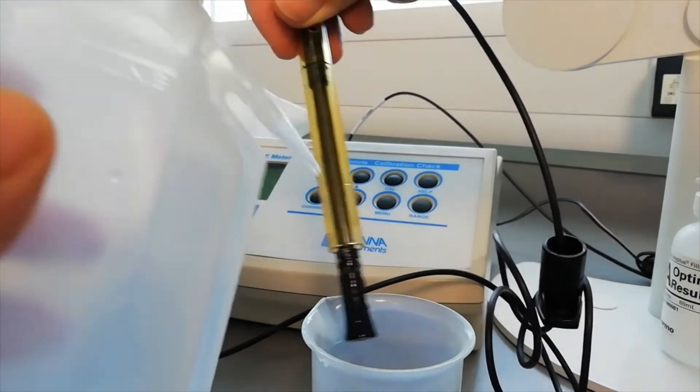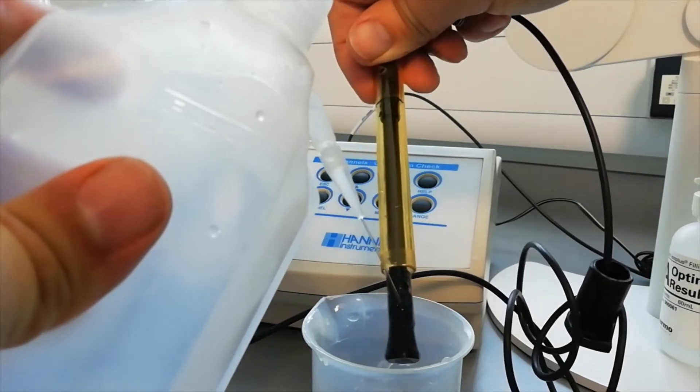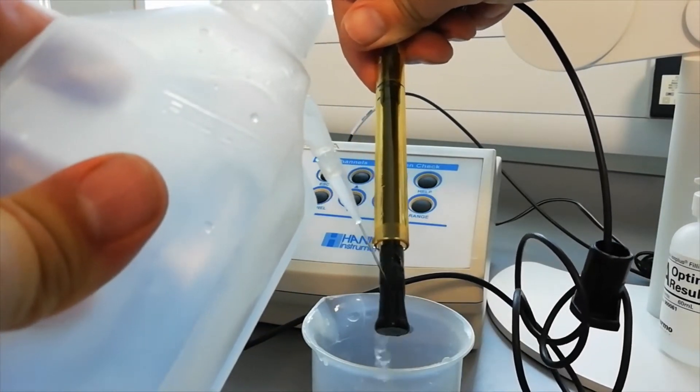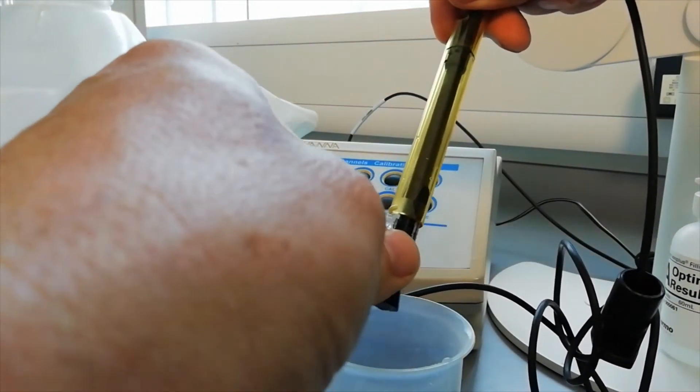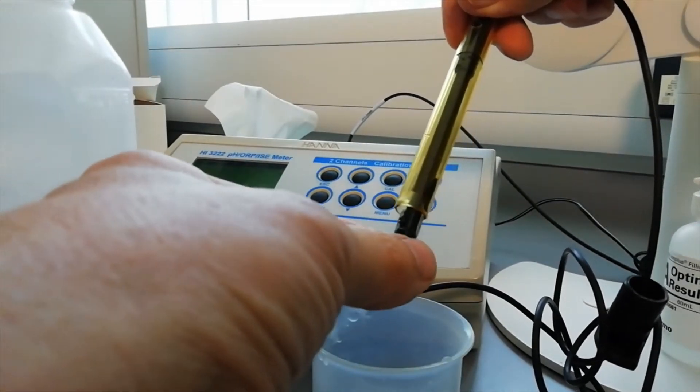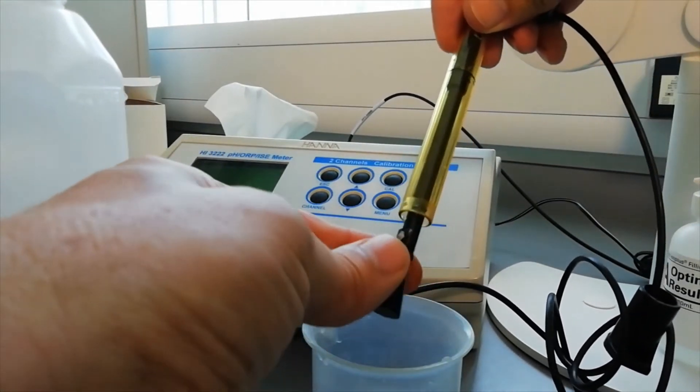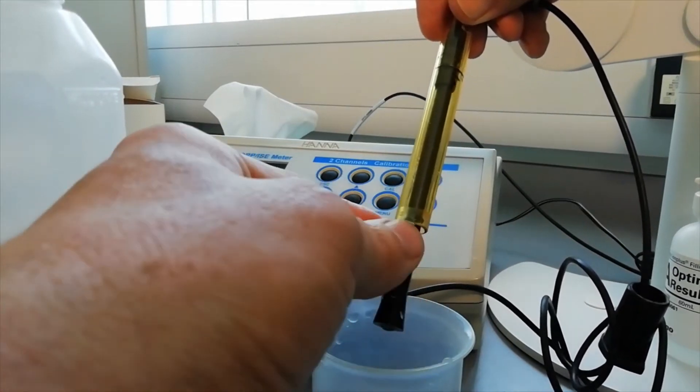Then using some DI water, rinse the crystals off and make sure there's nothing on there. There we go, look, there's crystals there. That's what suppresses the response. This is quite a bad example on an old electrode.